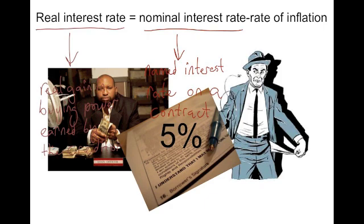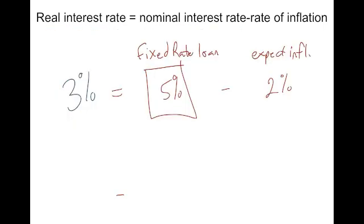The real interest rate equals the nominal interest rate minus the rate of inflation. They made the contract with a 5% nominal interest rate, the stated interest rate on the contract, because they expected inflation to be 2% and therefore they were expecting to earn 3% real buying power.